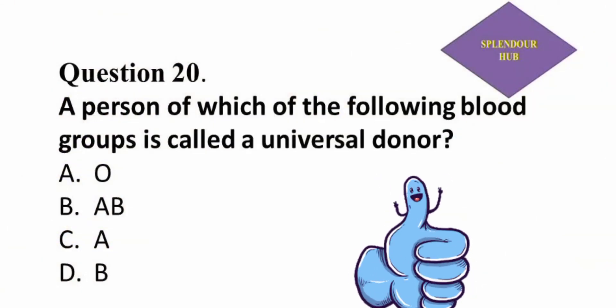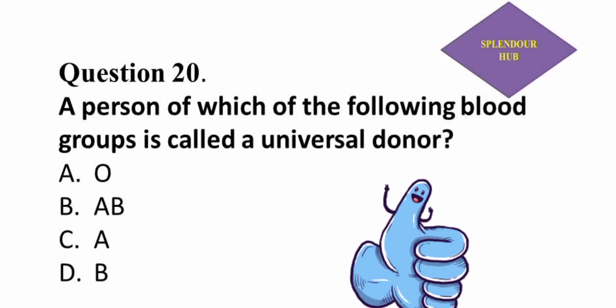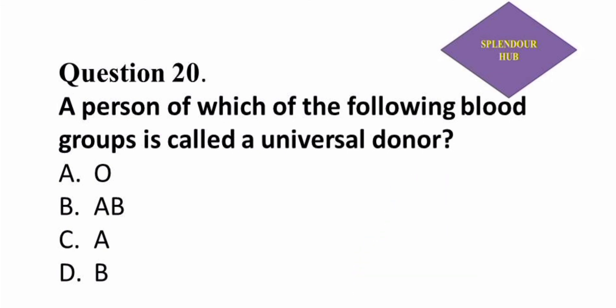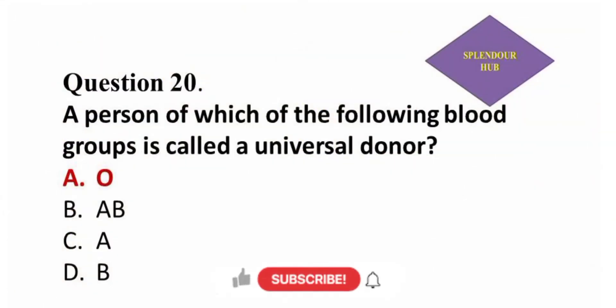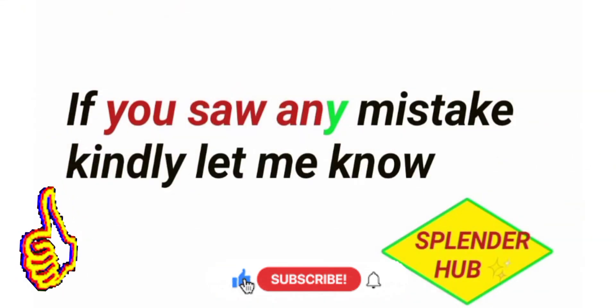Question 20: A person of which of the following blood groups is called a universal donor? — option A: O, option B: A, option C: AB, option D: B. Answer: A person of blood group O is called a universal donor. Thank you for watching.